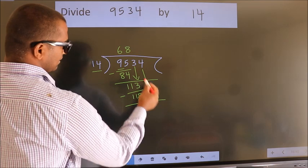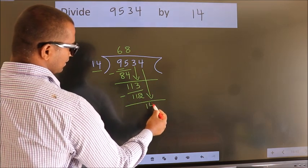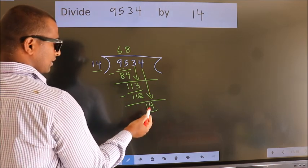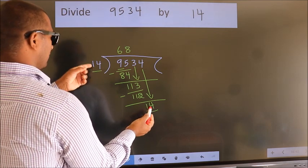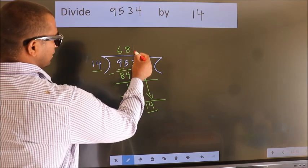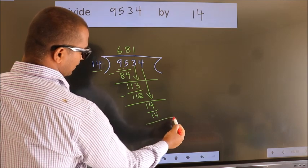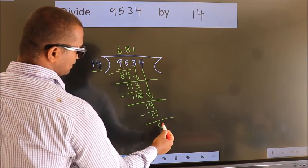bring down the beside number. So 4 down. So 14. When do we get 14? In the 14 table. 14 times 1 equals 14. Now we subtract. We get 0.